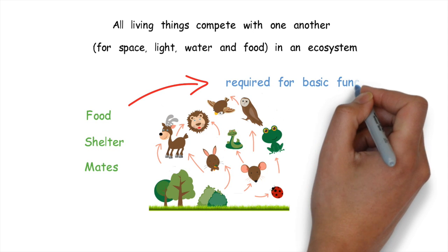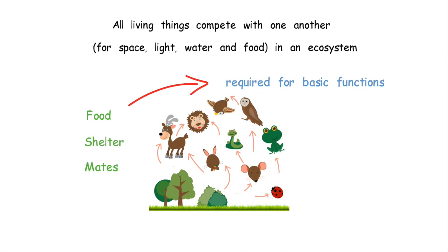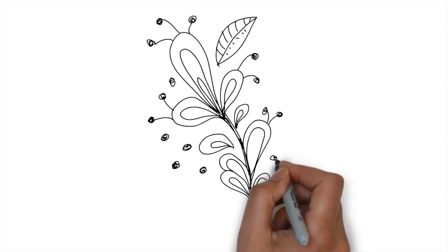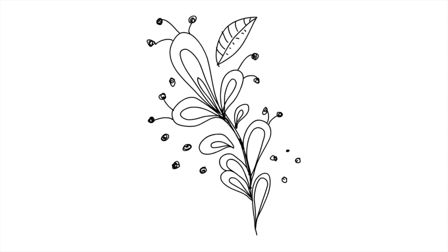Food is needed by all organisms to carry out the basic functions of life and to grow. In plant reproduction, seeds are dispersed to avoid competition for space, light, and water with the parent plant.